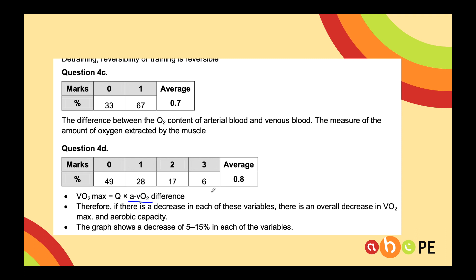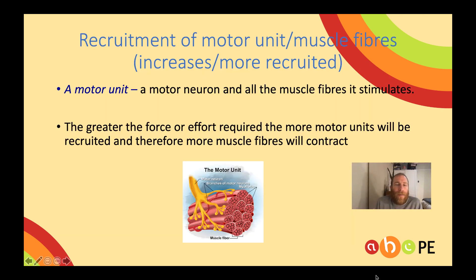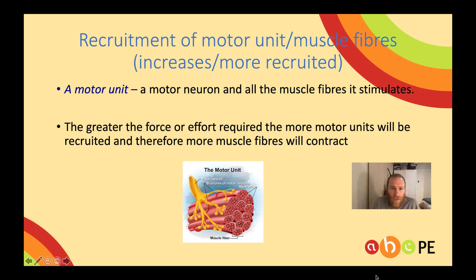The R in the FORTU acronym stands for recruitment of motor units, or recruitment of muscle fibers, and this will also increase with exercise. Motor units are a motor neuron and all the muscle fibers it stimulates. If you're doing a forceful activity such as a shot put or discus throw, you're going to recruit more motor units and therefore more muscle fibers will contract, allowing your forceful muscular contraction. If you're going for a walk or slow jog, you won't recruit as many motor units or muscle fibers.